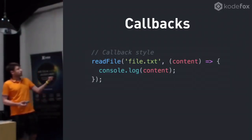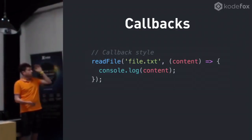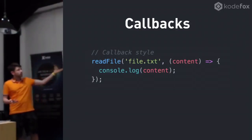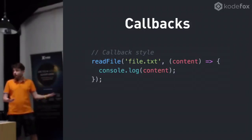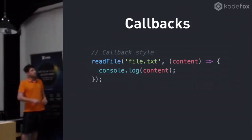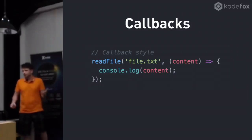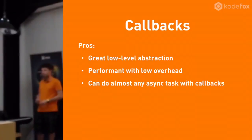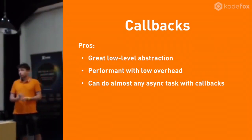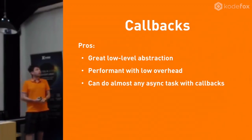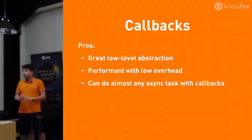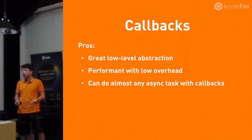This is the callback style - we're going to read a file, the file finishes reading, we have our content. The good things: it's a good low-level abstraction for concurrency, for asynchronous actions. It performs really well. It has low overhead, there's no context switching involved. And we can do almost any asynchronous task using callbacks.